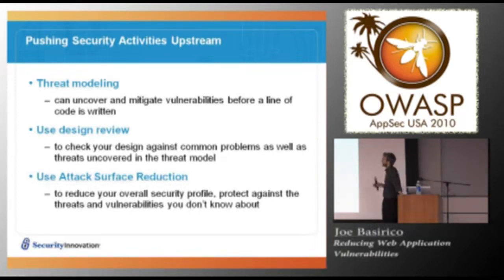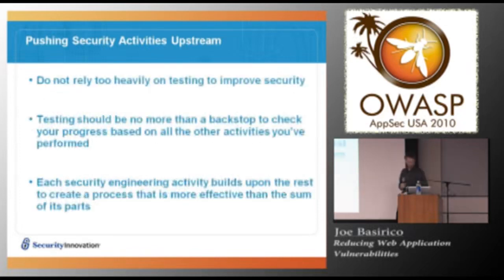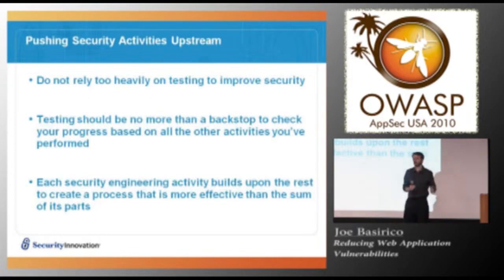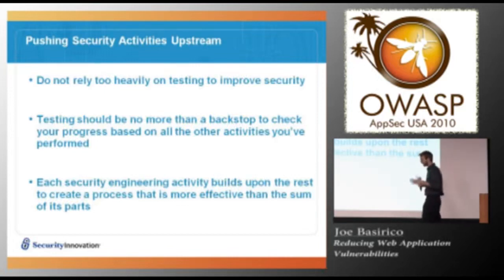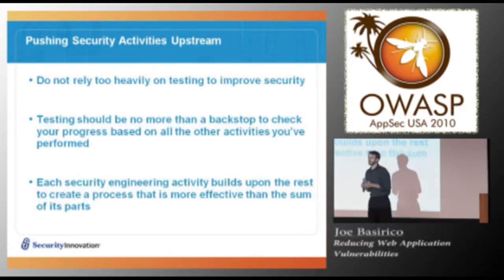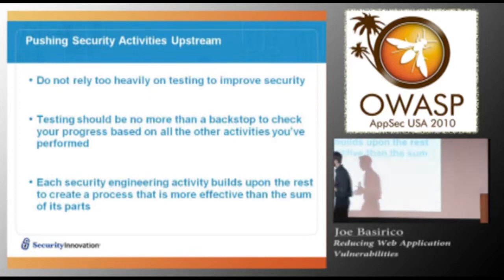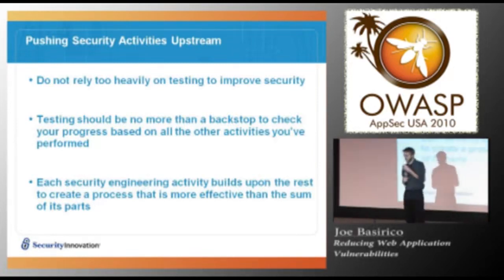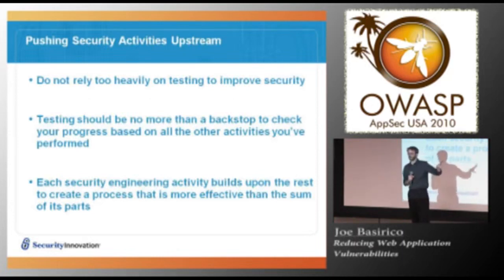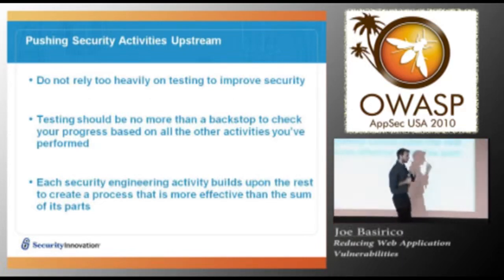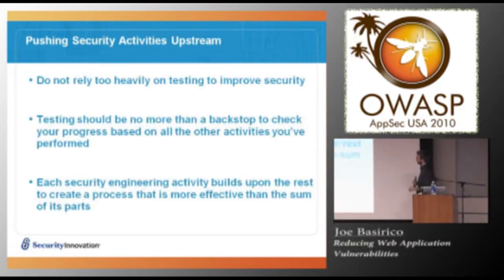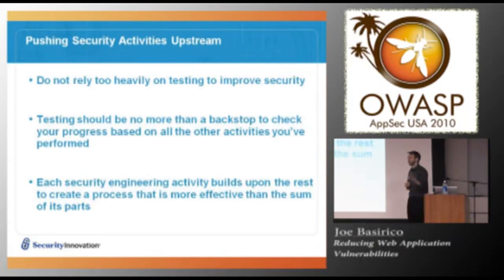Thinking about common problems in your design review can also help. Don't rely too heavily on testing — it's a common trap to build software and then toss it to testers to find all the issues. Testing should really just be a backstop to confirm that everything you've done up to that point is working. Testers should find it very difficult to find vulnerabilities. Obvious things like cross-site scripting and SQL injection should never happen in your software — those should be mitigated as soon as your developers write a line of code. Each security activity builds upon the next.